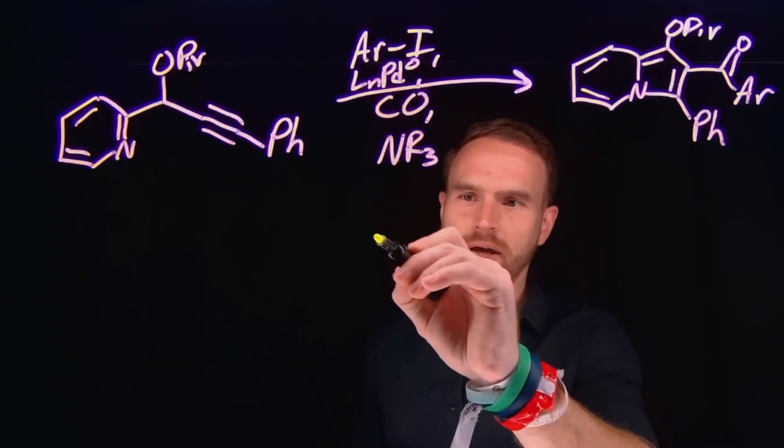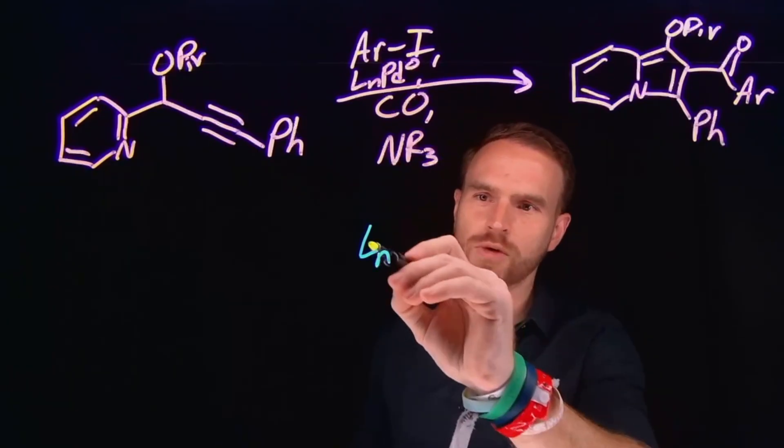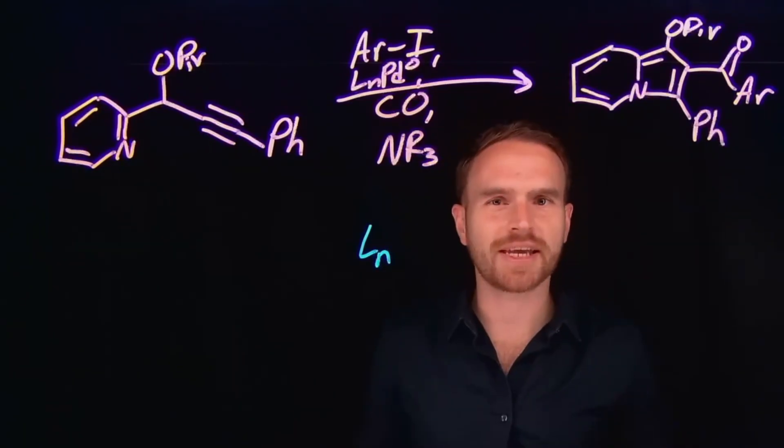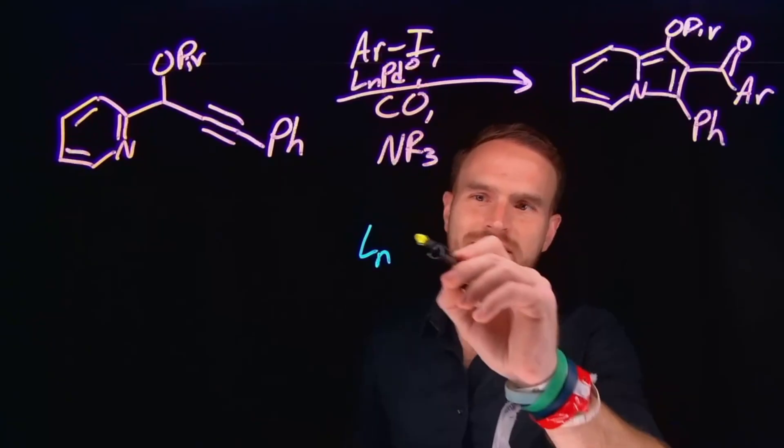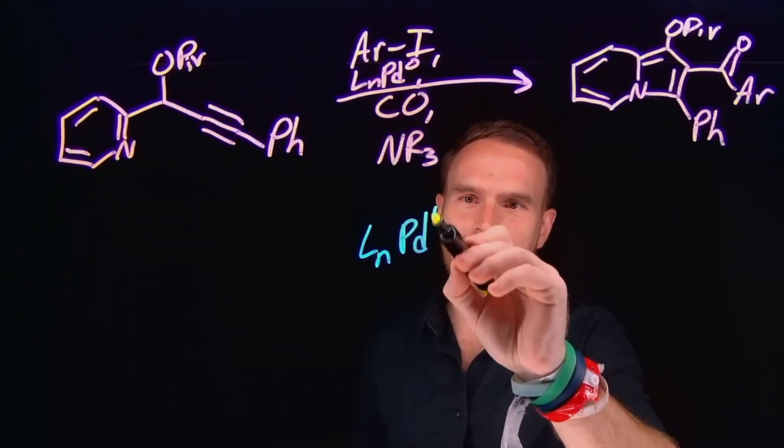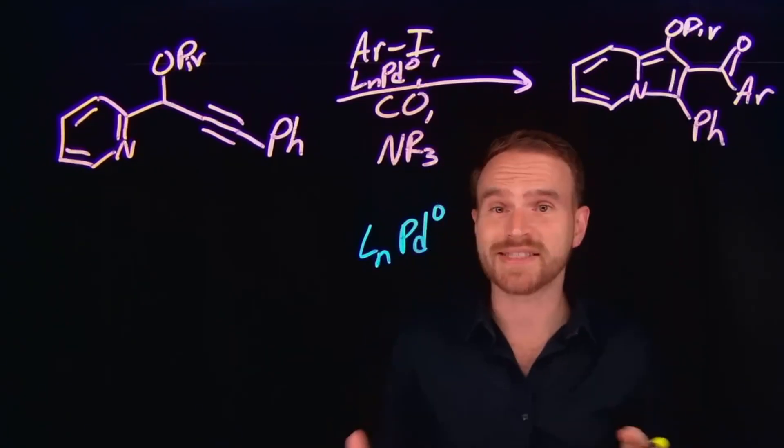Typically we start by assuming that we have some amount of ligand, which is why this capital L with the subscript N is written, just to indicate that there's some amount of ligand that's coordinated to our palladium complex. And specifically, this is going to be palladium in the zero oxidation state.